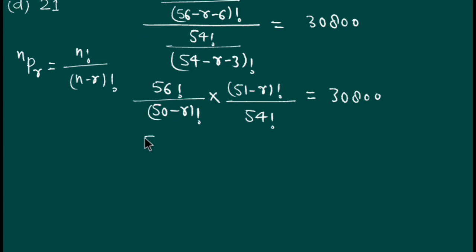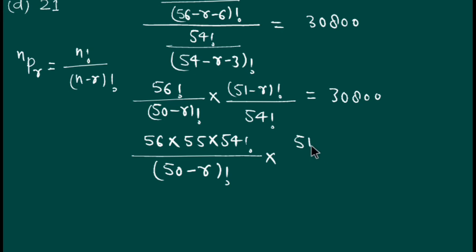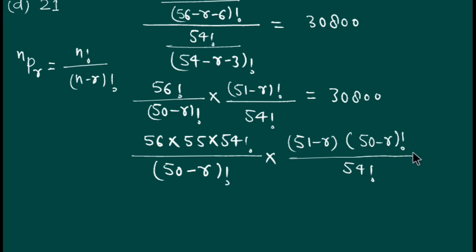We can write 56 factorial as 56 times 55 times 54 factorial, divided by (50 minus r) factorial. And we write (51 minus r) factorial as (51 minus r) times (50 minus r) factorial, divided by 54 factorial. This whole term equals 30800.